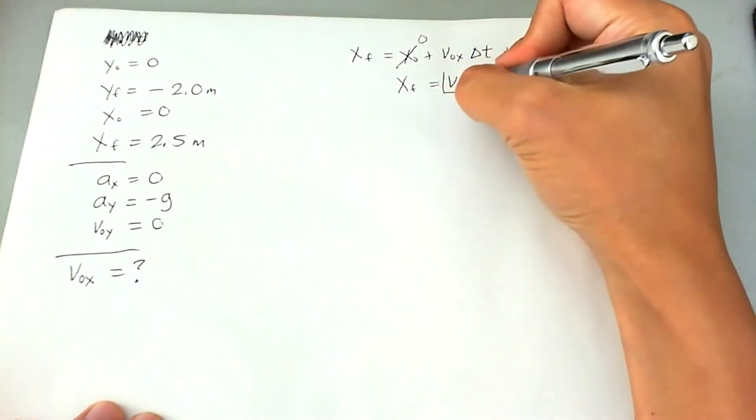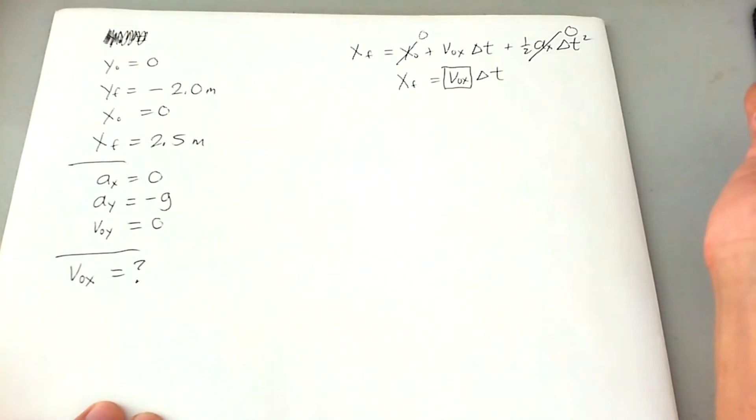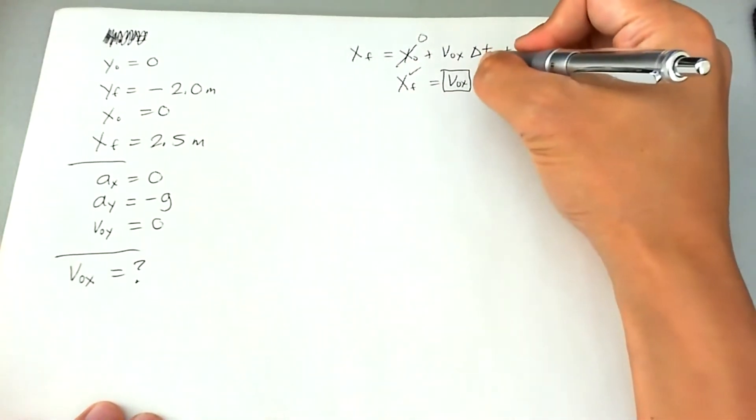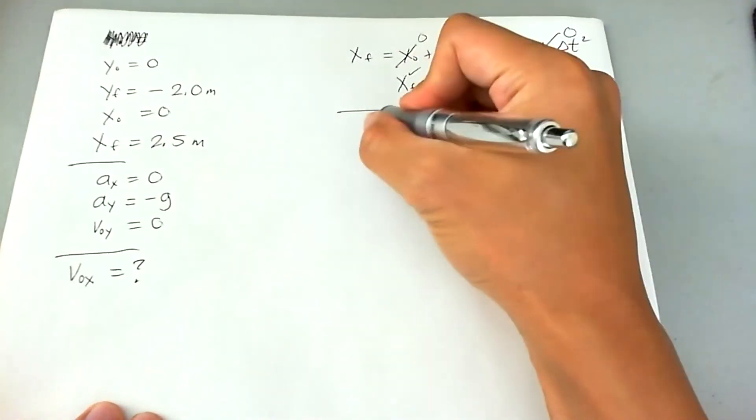What we need to find is V naught X. What we know is X final and what we don't know is delta T. So this looks like a side quest.